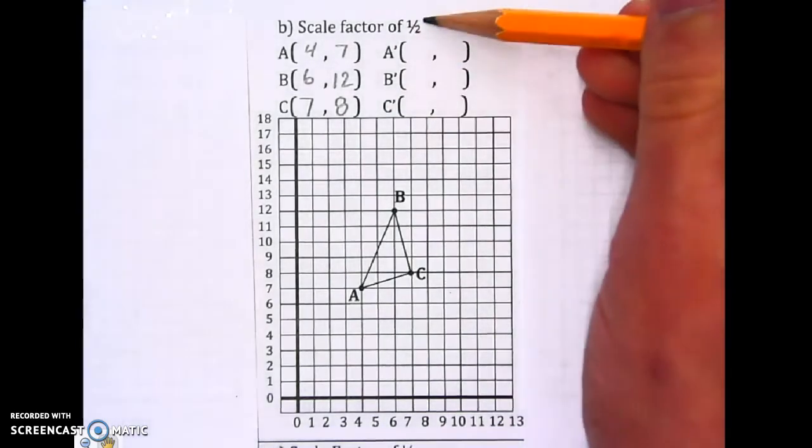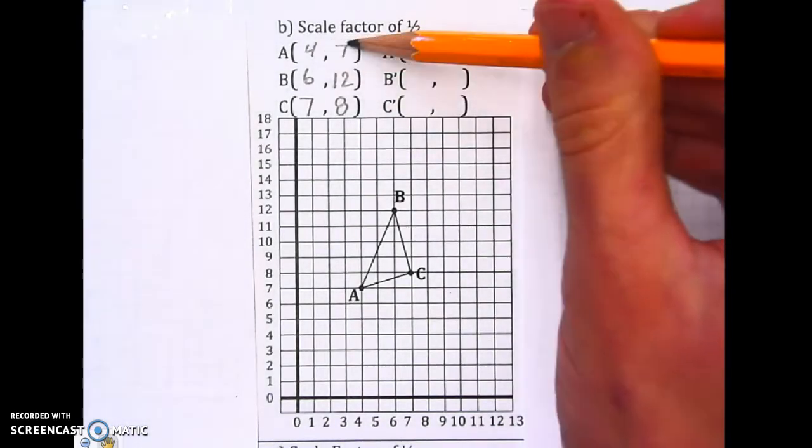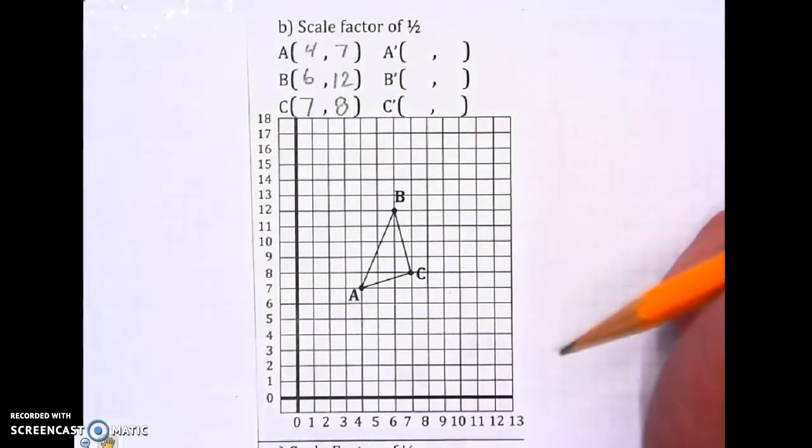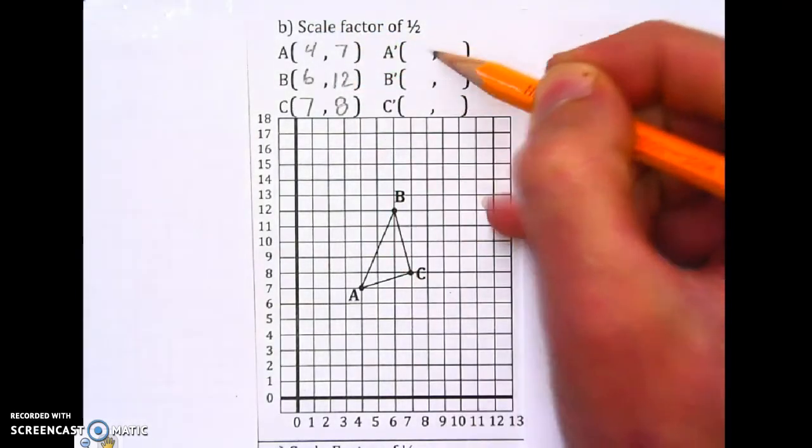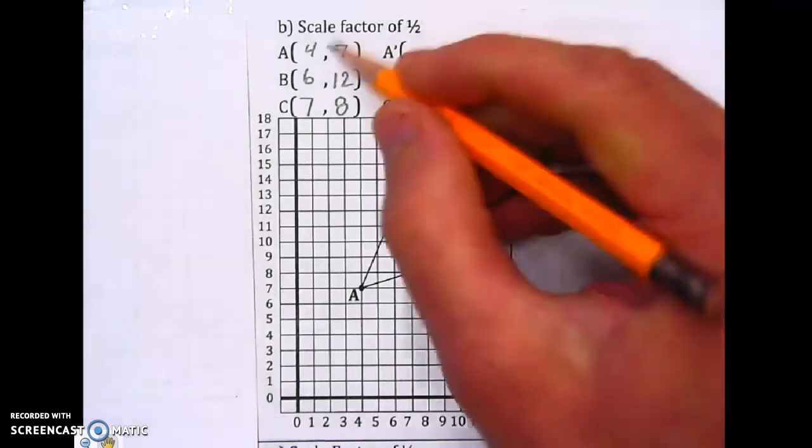Okay, so I need to multiply each point, each number by a half. That's the same as just dividing by 2. So I'm going to divide each thing by 2. It's okay to get a decimal and be in a half a spot. That's just fine.